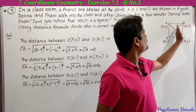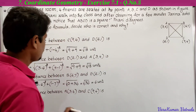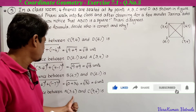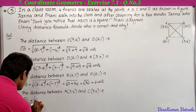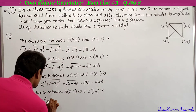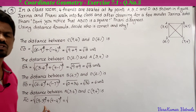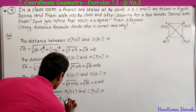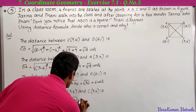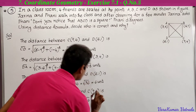Next we find the distance between A(3, 4) and C(9, 4). AC = √[(9 - 3)² + (4 - 4)²] = √[6² + 0²] = √[36 + 0] = √36 = 6 units.